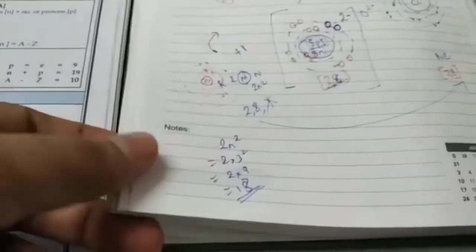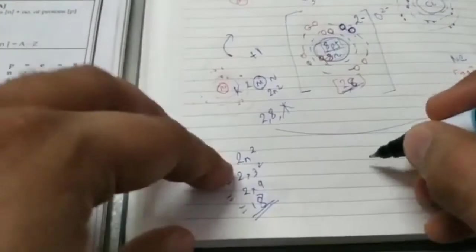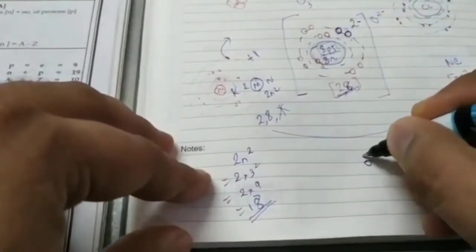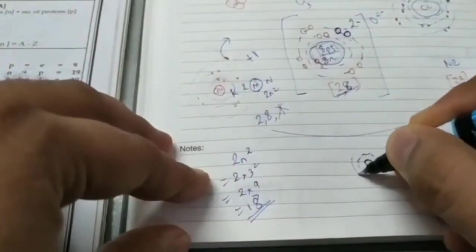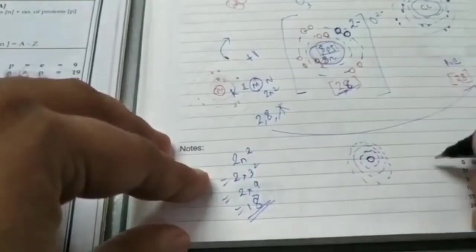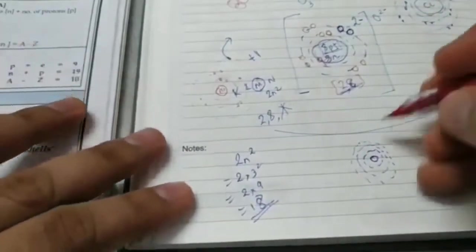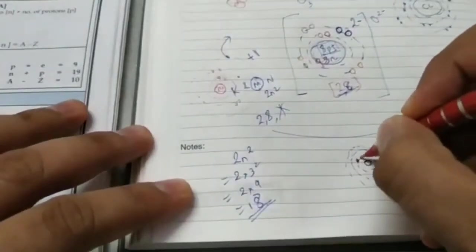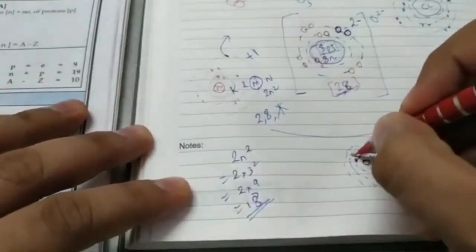But if that's the case, what happens if I draw an atom of calcium? Let's see. Drawing the nucleus, the first shell, second shell, and third shell. Calcium's atomic number is 20. So let me draw 20 electrons. I've got 2 electrons in the first shell.